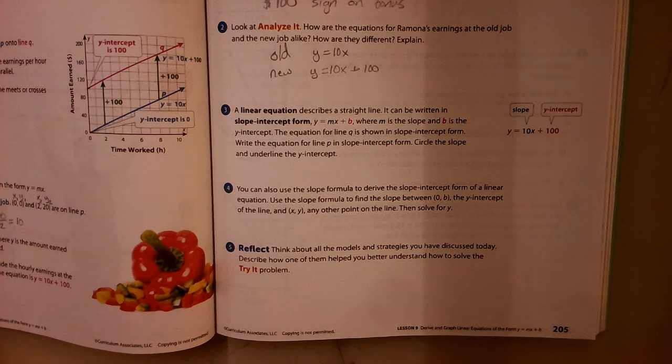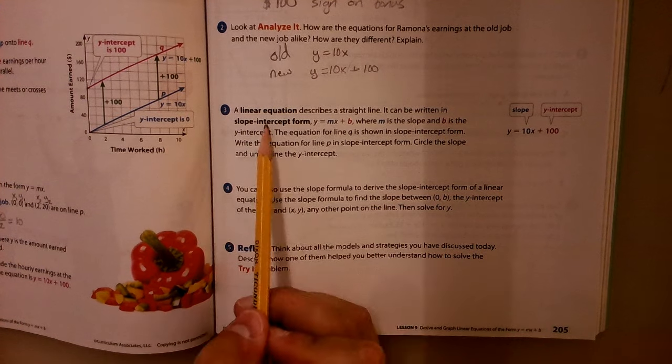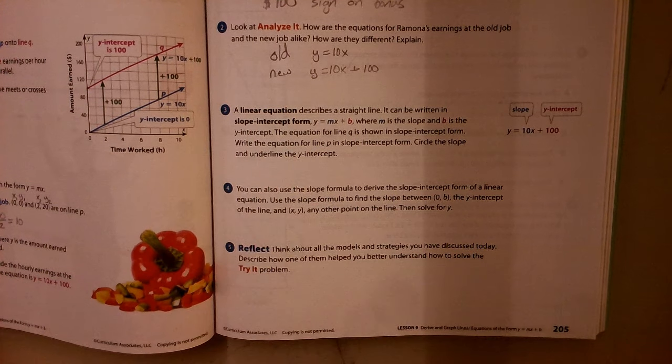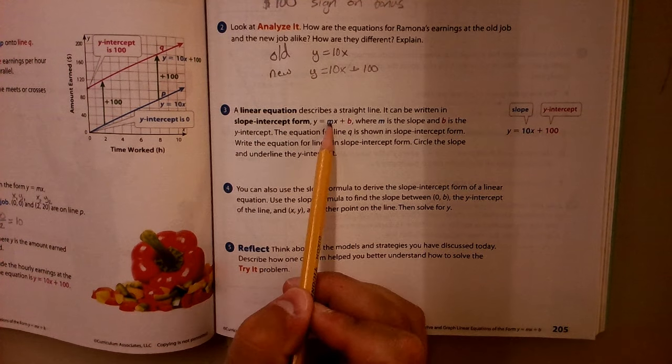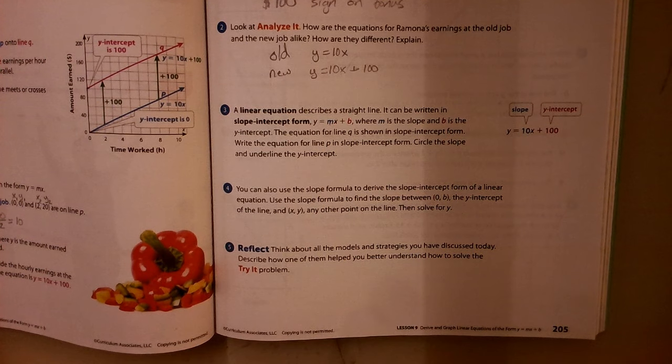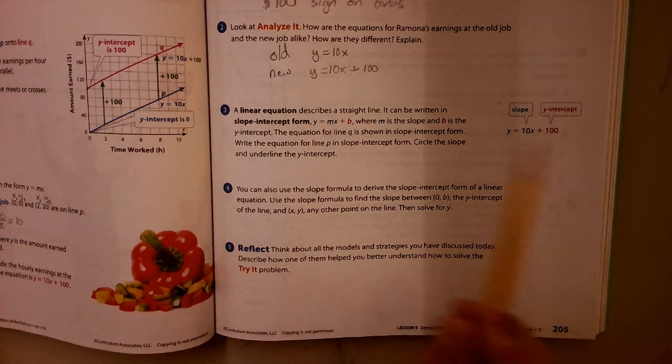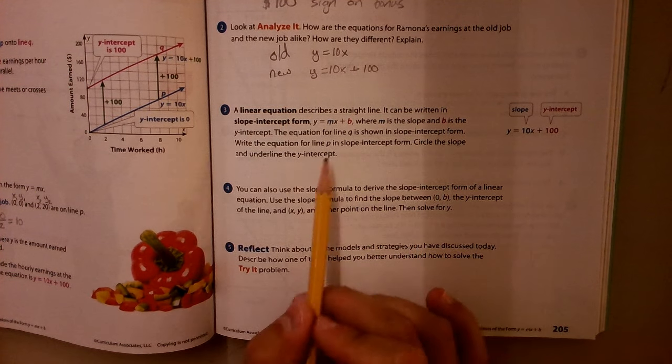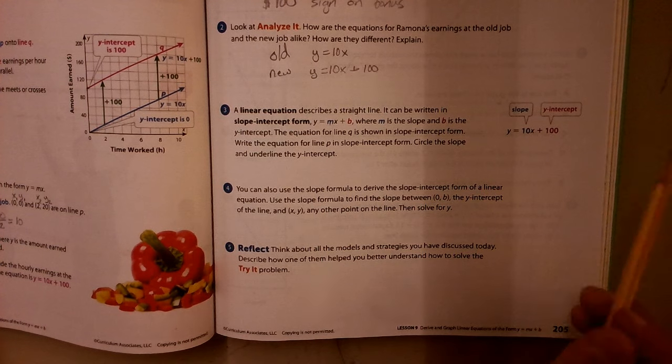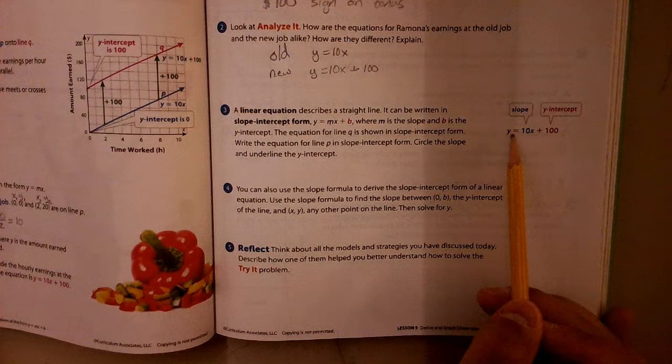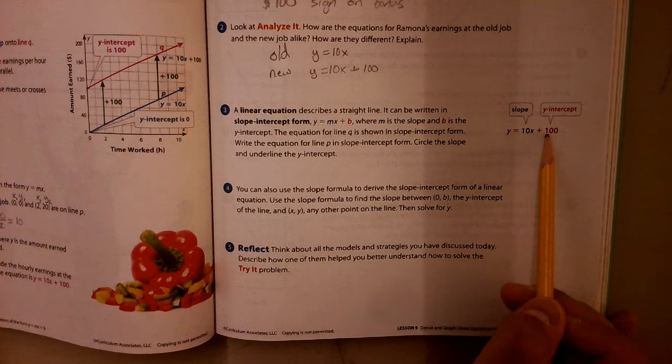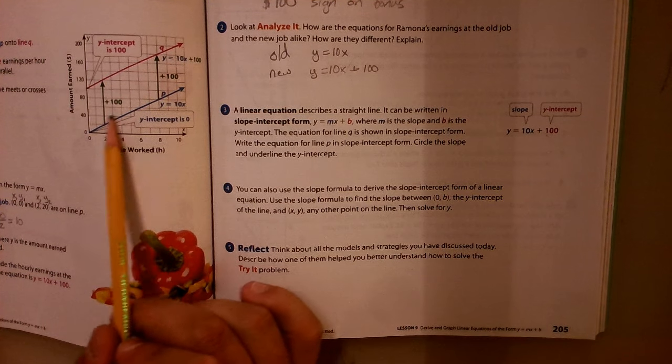Next, a linear equation describes a straight line. It can be written in slope-intercept form. So this Y equals MX plus B is called slope-intercept form. And that's where M, this M here is the slope, and B is the Y-intercept. The equation for line Q is shown over here. Write the equation for line P in slope-intercept form. So this is her new job. Y equals 10X plus 100, where we have the slope and the Y-intercept.